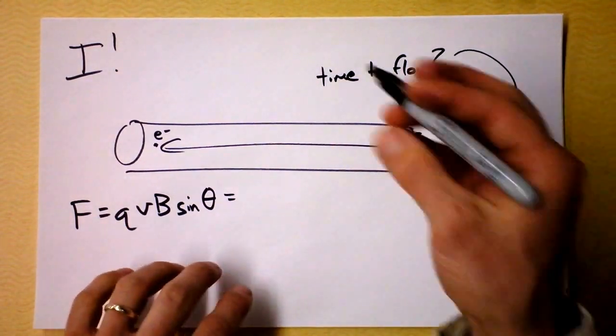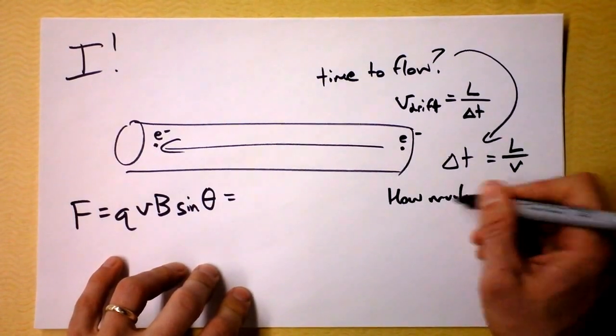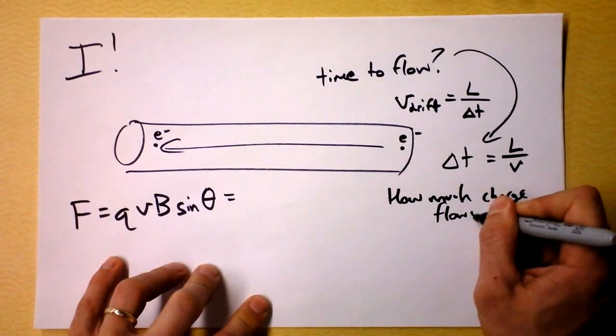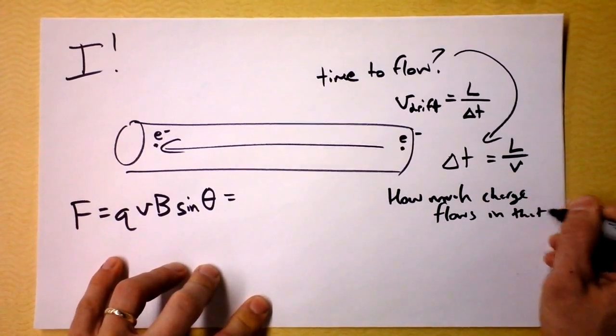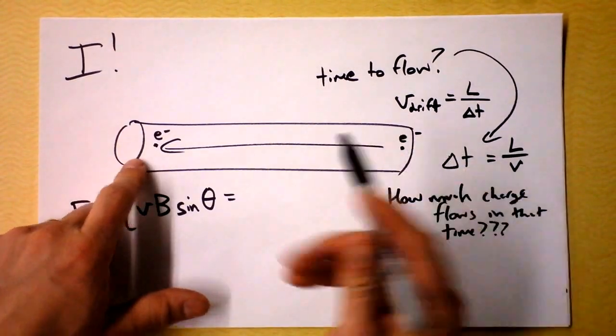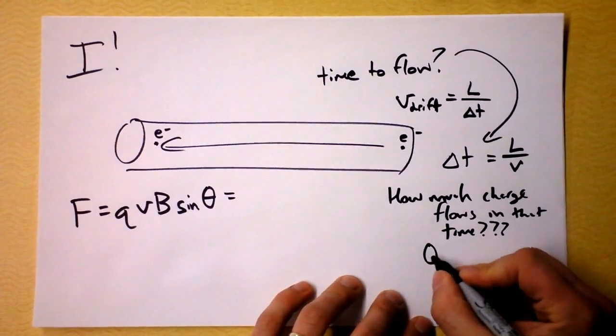Now, I guess my next question is, how much charge flows? How much charge flows in that time? While the charge goes from here to here, how much is going through a certain segment of that? And that, of course, is q.